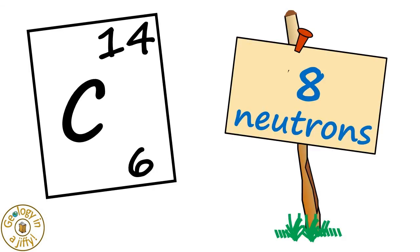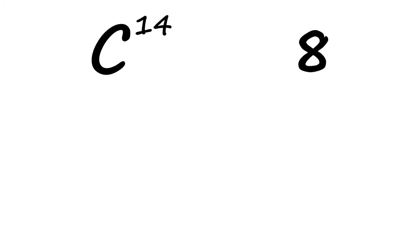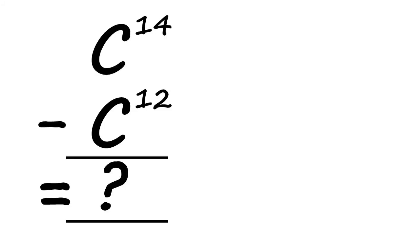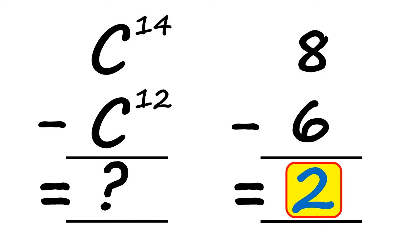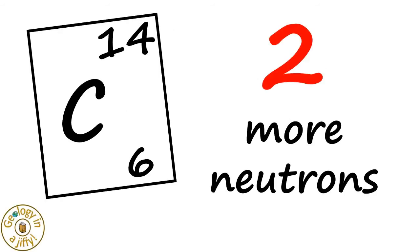So carbon-14 has eight neutrons in its nucleus, and carbon-12 has six neutrons in its nucleus. So if we think of these isotopes as a subtraction sum, eight neutrons subtract six neutrons informs us that the difference between the two isotopes is that carbon-14 has two more neutrons in its nucleus.